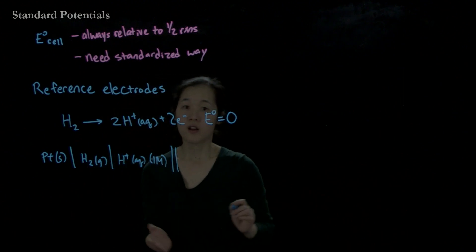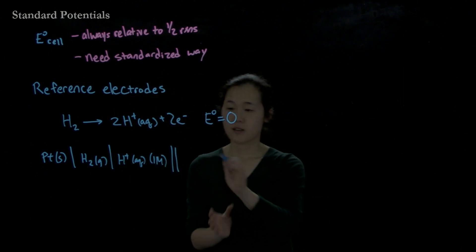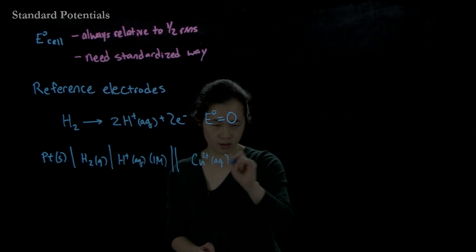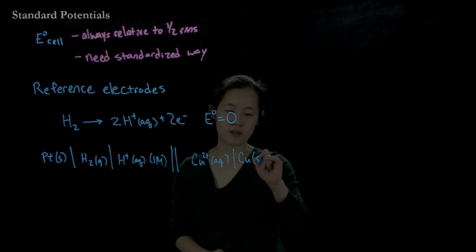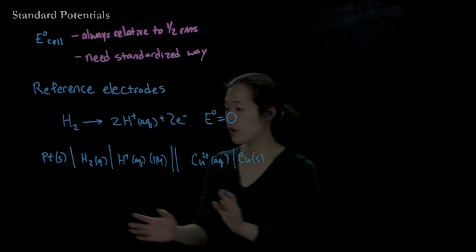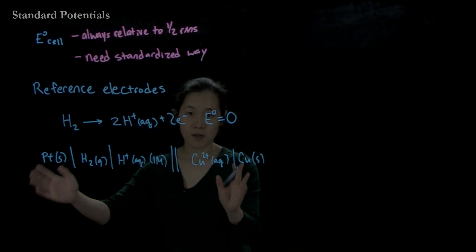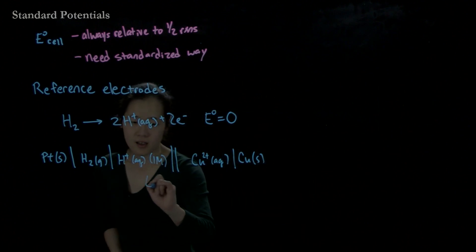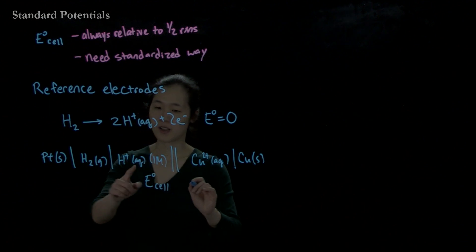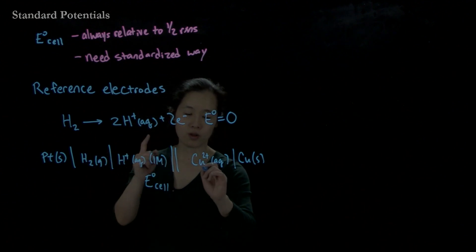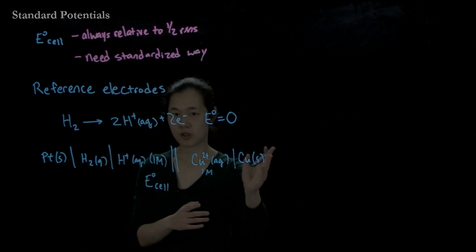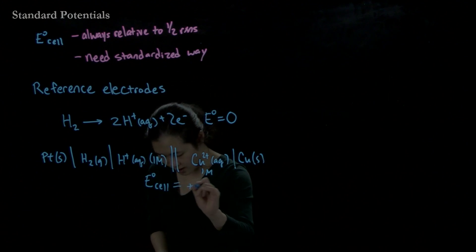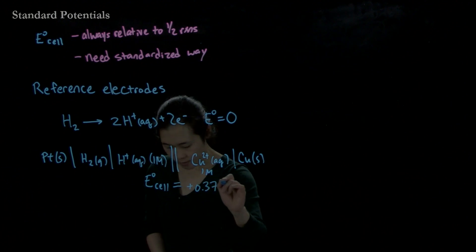And then on the other side, we then have our cathodic reaction. So let's say copper two plus going to copper solid, which will also be our electrode. So we can measure the cell potential of this. And then it turns out that E cell, E naught cell - again, this is standard condition, one bar, one molar, one molar, pure solid copper - this ends up being plus 0.37 volts.